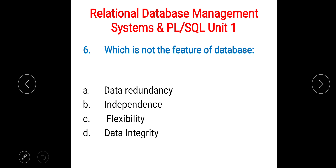Next: which is NOT a feature of a database? Options are A) data redundancy, B) independence, C) flexibility, D) data integrity. The right answer is A) data redundancy — it is not a feature of a database.